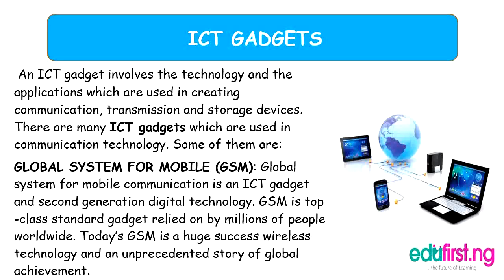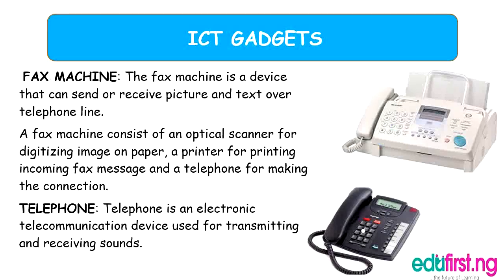The second ICT gadget we'll consider is the fax machine — a device that can send or receive pictures and text over a telephone line. A fax machine consists of an optical scanner for digitizing images on paper, a printer for printing incoming faxes, and a telephone for making connections. It is used to receive data as both pictures and text. It's not so common in our time.